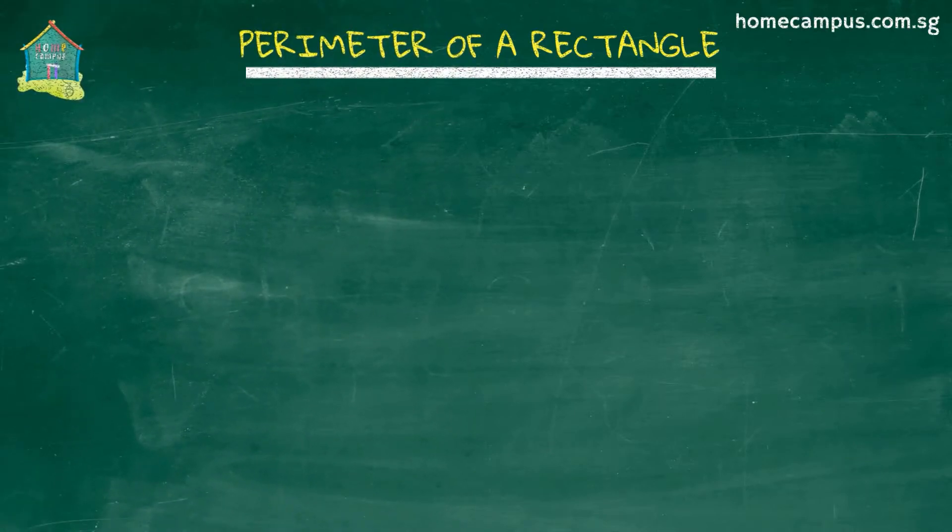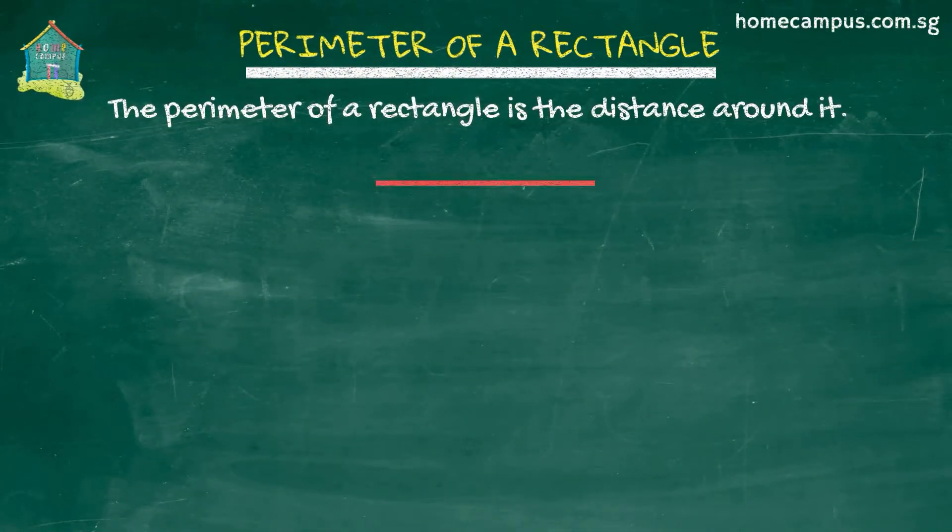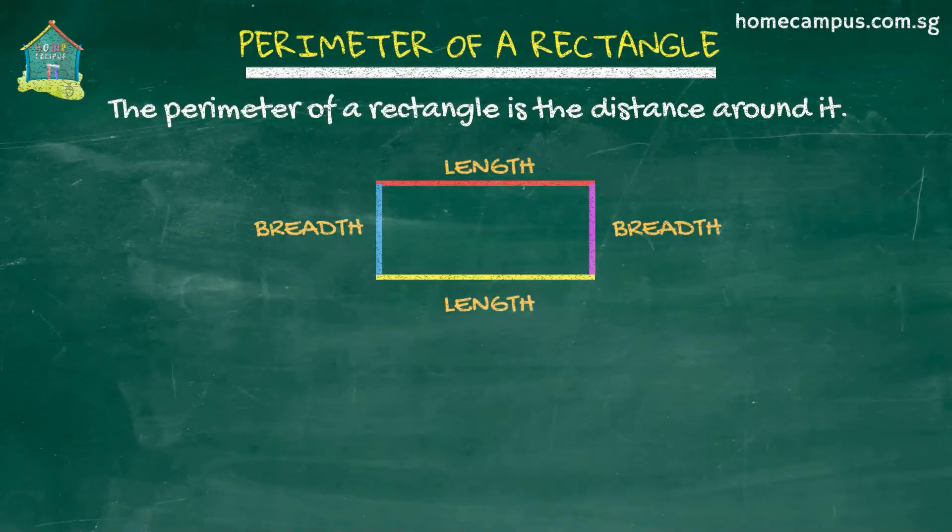The perimeter of a rectangle is the distance around the rectangle. The sides of a rectangle are called length and breadth. The longer side is the length and the shorter one is the breadth.